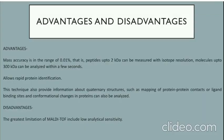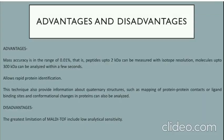Now the advantages and disadvantages of MALDI-TOF. The advantages are: mass accuracy is in the range of 0.01%, that is peptides up to 2 kilodalton can be measured with isotope resolution. Molecules up to 300 kilodalton can be analyzed within a few seconds.